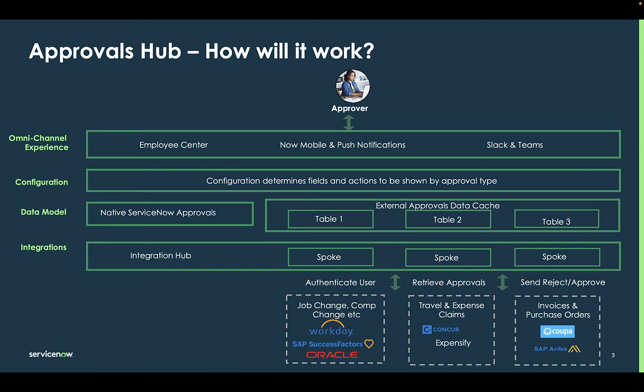The fourth layer is the experience layer. That's where you decide where you want this approvals experience to live — whether it's on the mobile application, on the Employee Center, embedded within Microsoft Teams, or a combination of all of them.